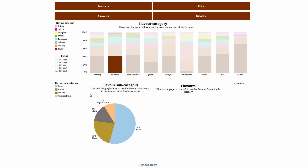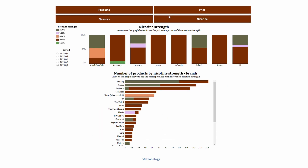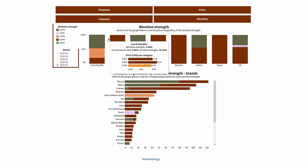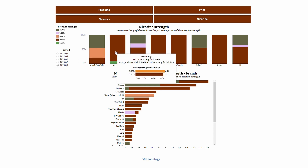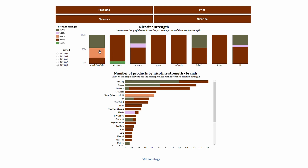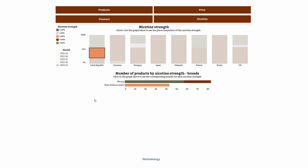Flavor subcategories are further split into specific flavors by clicking on the pie. Moving on to the nicotine tab, we can have a look at the comparison of nicotine strength distribution in each country. You can see the different available nicotine strength levels on the left and you can filter by a specific period. Hovering over the graph provides a price comparison between various nicotine strength levels. The bottom chart is activated by clicking on any data point on the graph, and it shows the number of products displayed by nicotine strength at the brand level.